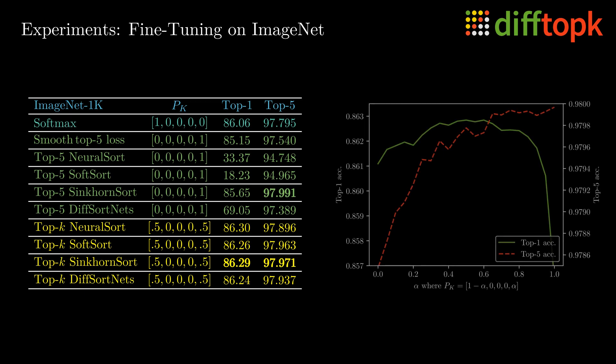Additionally, we consider how changing the ratio between K equals 1 and K equals 5 affects both top 1 and top 5 performance. Here, we have an increasing probability for top 5 when going from left to right. We observe that while the top 5 accuracy improves when increasing its relevance to the loss, also the top 1 accuracy improves up to a certain point. One of the key observations of our work is that the top 1 accuracy improves when including top 5 to a certain extent.